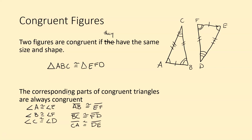The corresponding parts of congruent triangles are always congruent. Given just the congruent statement, even without a picture, we can determine all the corresponding parts. Just looking at the statement, A corresponds to E so angle A is congruent to angle E; B corresponds to F so angle B is congruent to angle F; C corresponds to D so angle C is congruent to angle D. For the sides: AB is congruent to EF, BC is congruent to FD, and CA is congruent to DE.